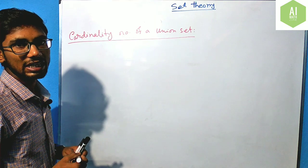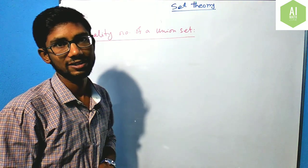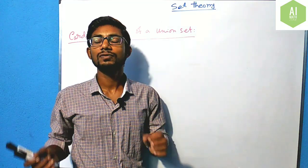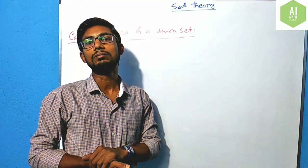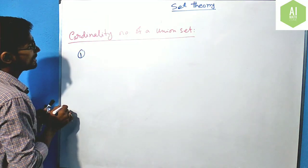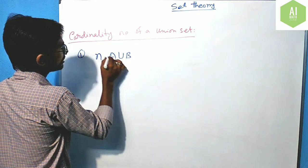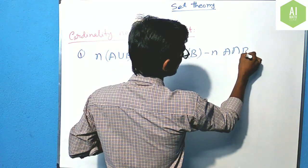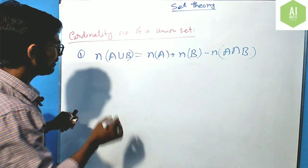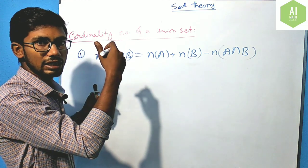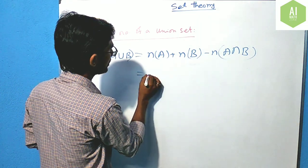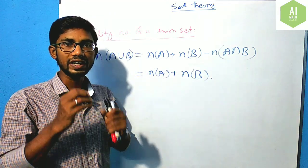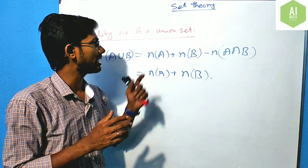Suppose there are two sets A and B and we want to find the cardinality of their union. The formula is: |A∪B| = |A| + |B| − |A∩B|. This is very useful for solving daily life problems related to union and intersection. If the two sets are disjoint, the formula reduces to |A∪B| = |A| + |B|.